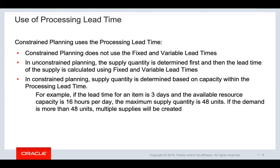Here are some very important points about constraint planning behavior. Constraint planning uses the processing lead time and not the fixed and variable lead time as used in unconstrained planning. In unconstrained planning, the supply quantity is determined first and then the lead time of the supply is calculated using fixed and variable lead times, using the formula: fixed lead time plus variable lead time multiplied by supply quantity.